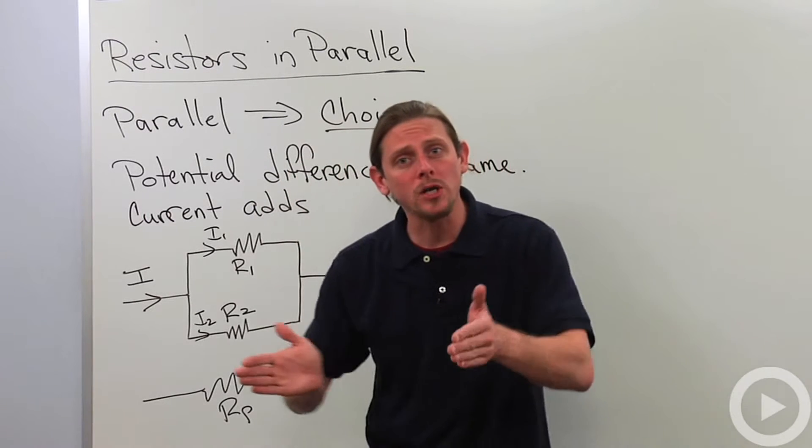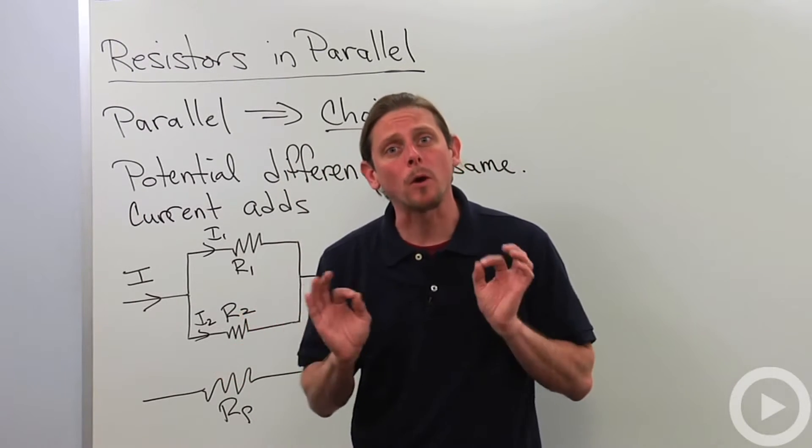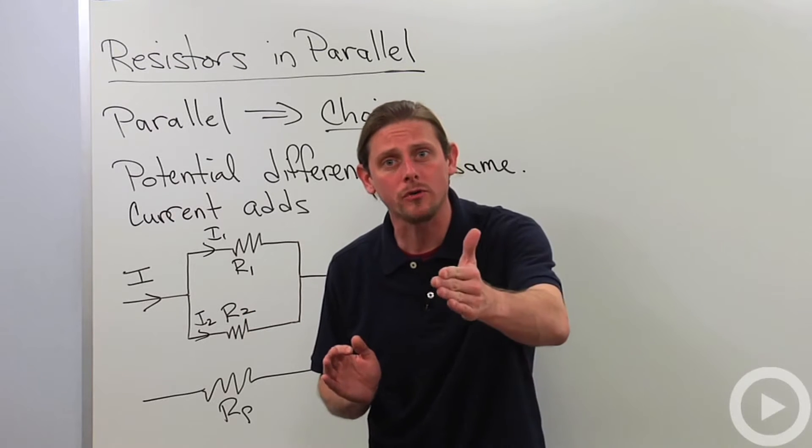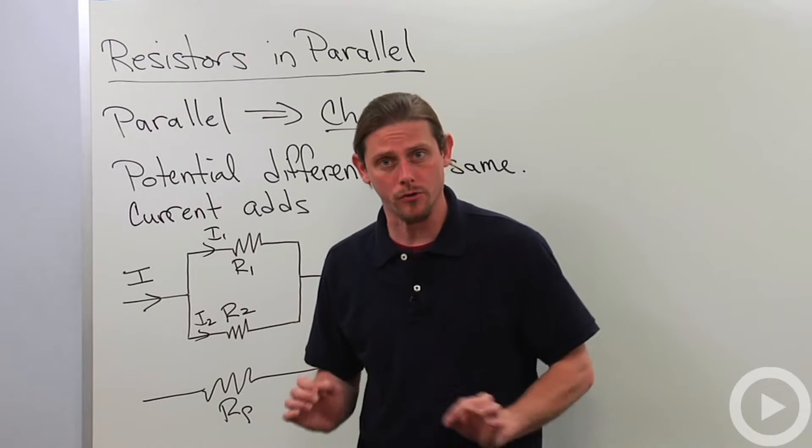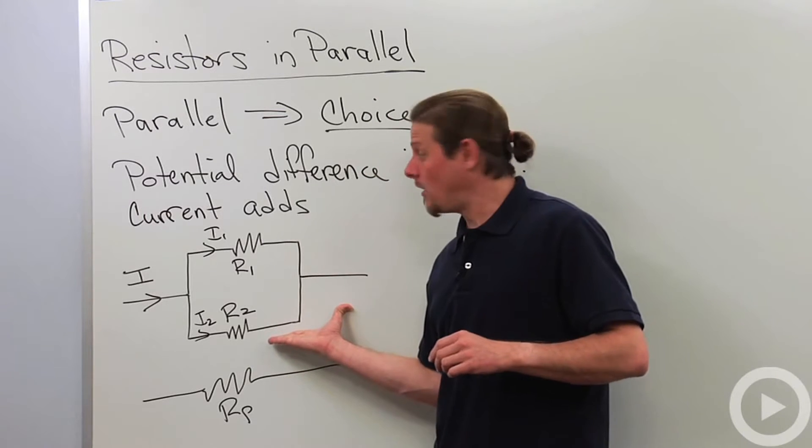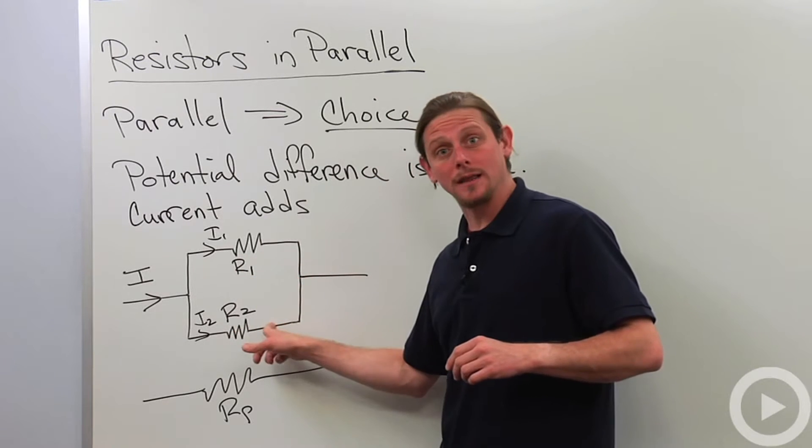Parallel means there's a choice. It means that there's a branching off in the circuit and that the current can choose to go one direction or another direction. So in parallel, a resistor network looks like this.